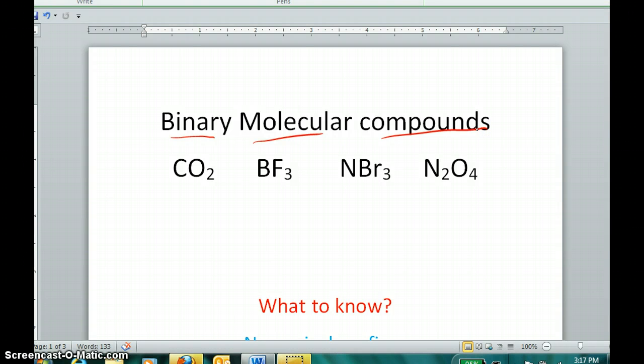You can identify them as such because binary is implying that there are two things in the compound, two elements. And molecular implies that they are molecules, meaning the two elements you see in these compounds are both typically nonmetals. Now, examples of such compounds are below. We have two elements in this compound, and we notice that they are both nonmetals.